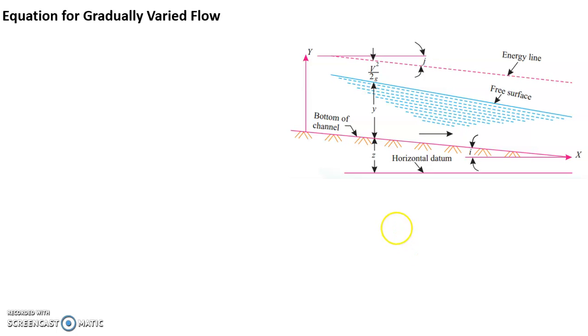V square by 2g is the kinetic head. And there are I and J in addition to the other things. I is the slope of the channel bed. And J is slope of energy line. So we approximate here I or tan I being equals to I as SB. SB is slope of the channel bed, S subscript B.